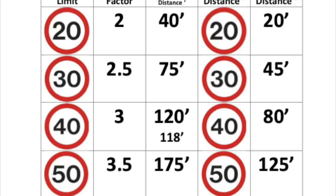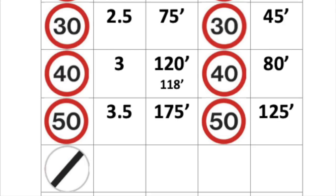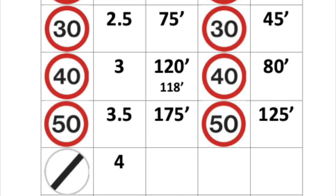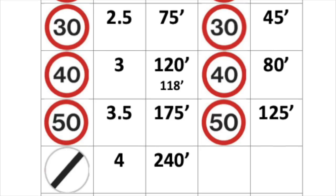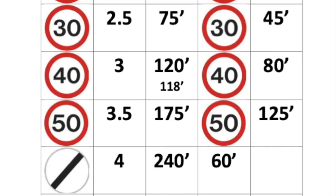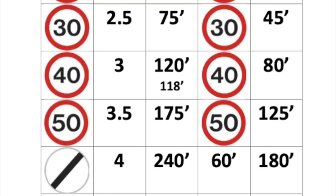Next up it's 60 miles an hour. Multiply it by 4, giving us 240 feet. We then take away the thinking distance of 60 feet, and this equals 180 feet braking distance.